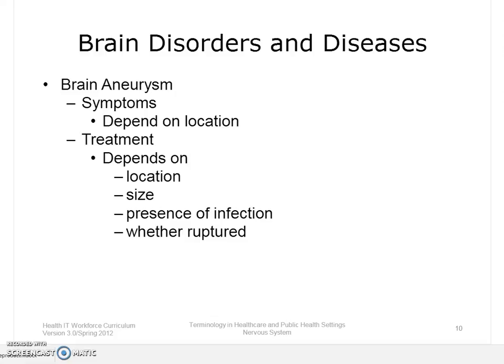Another brain disorder involves an abnormal bulge or ballooning in the wall of an artery — this is called a brain aneurysm. Most brain aneurysms produce no symptoms until they become large and begin to leak blood or rupture. Symptoms may include a droopy eyelid, double vision, or other changes in vision, pain above or behind the eye, a dilated pupil, and numbness or weakness on one side of the face and body. Treatment depends on the size and location of the aneurysm, if infection is present, or whether or not it has ruptured.